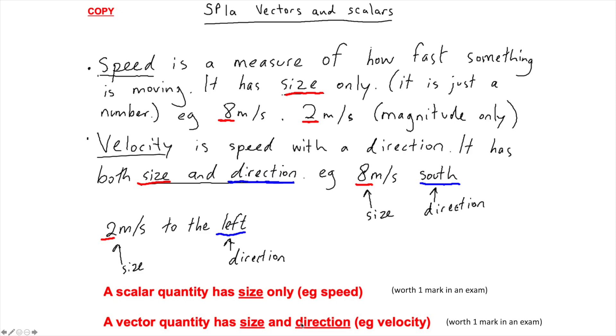Whereas a vector quantity has size and direction, so if we take speed and turbocharge it, we can turn it into velocity because it's basically speed with a direction. So it has a size, just like speed, and it has a direction. For example, you wouldn't just say eight meters per second, you'd say eight meters per second south.